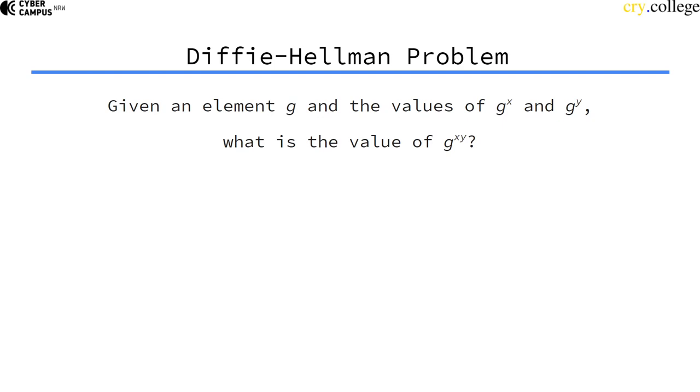In order to compute this value here, just by looking at those two values, we would need to compute the discrete logarithm of this value to get an exponent to be able to calculate that value. And the discrete logarithm, as we have seen, is computationally infeasible for large enough numbers.